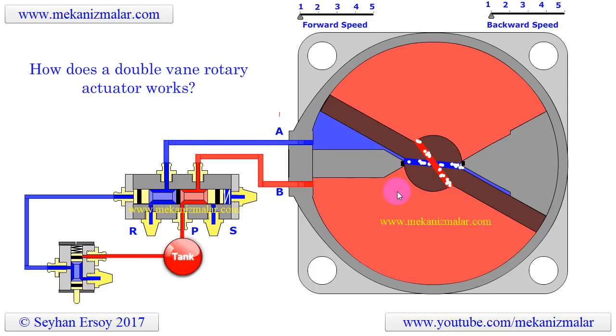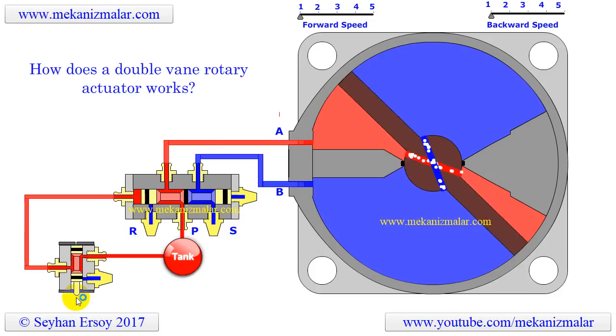The biggest advantage of the double-vane rotary actuator is that its vane is balanced. Since the pressurized oil is acting on two sides of the vane simultaneously, the pressure force acting on the shaft is balanced.